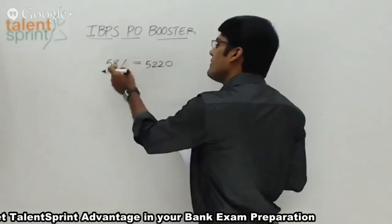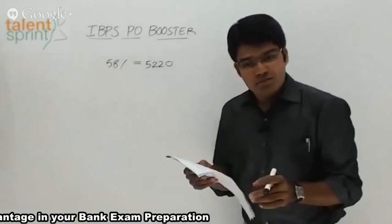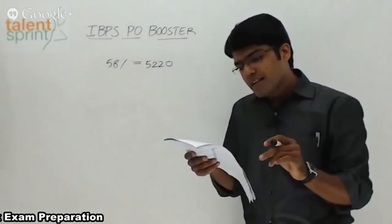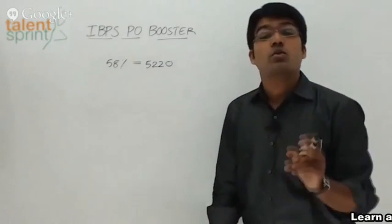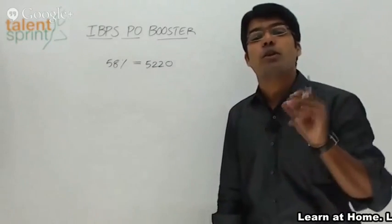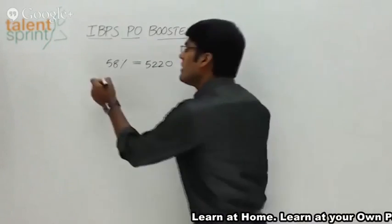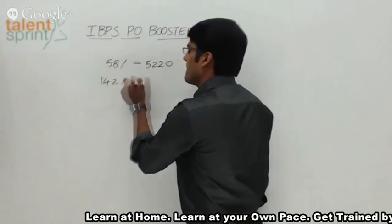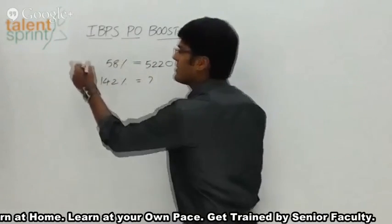So we can say 58% is equal to 5,220. We want the profit to be 42%, so what should be the selling price? It should be 142%. Cross multiply and we get the answer.